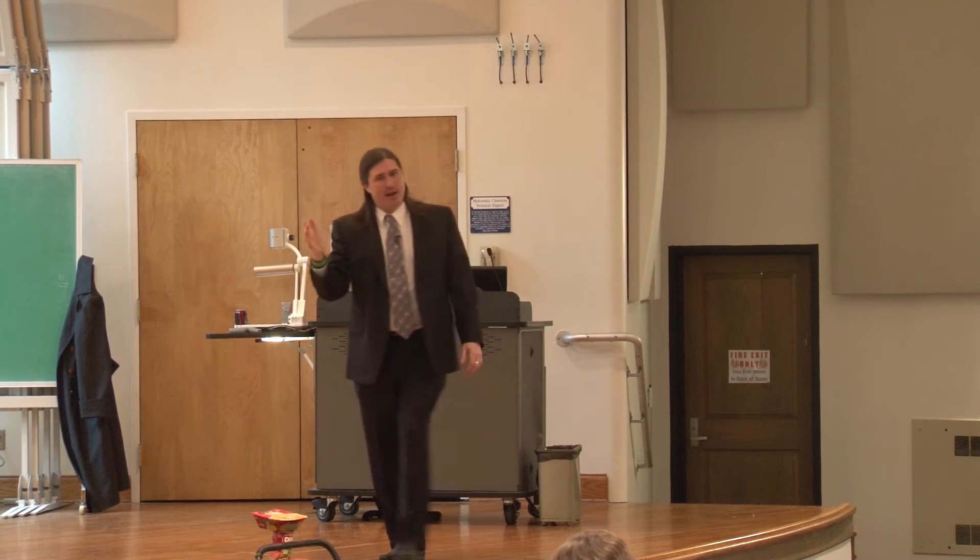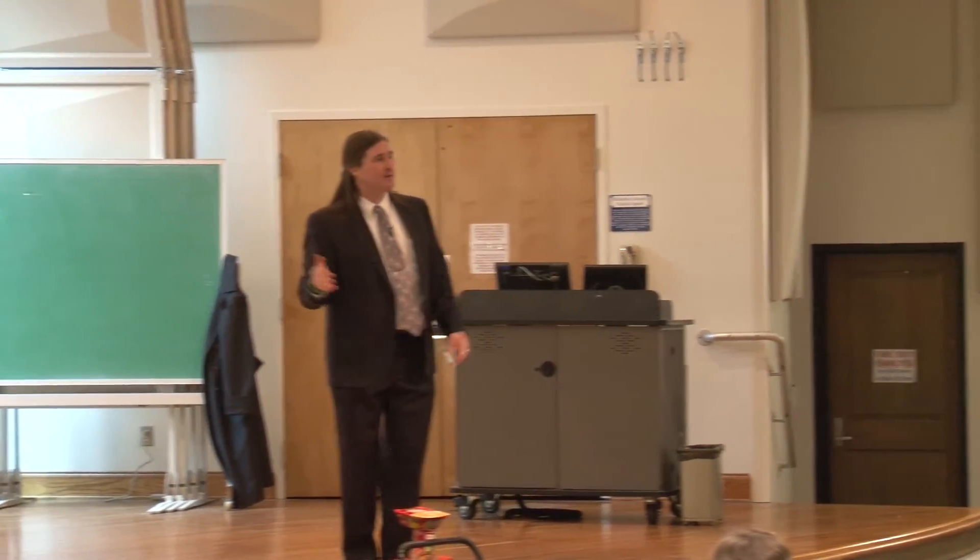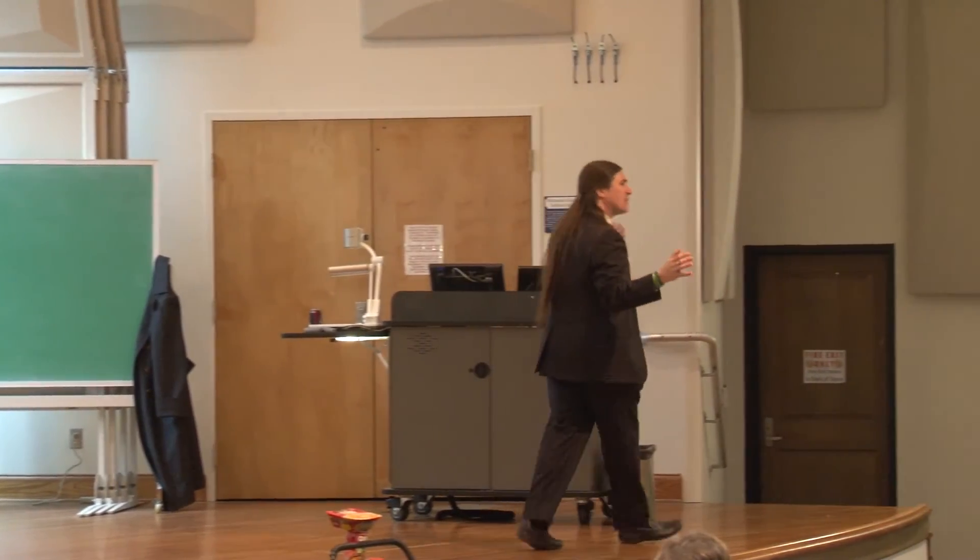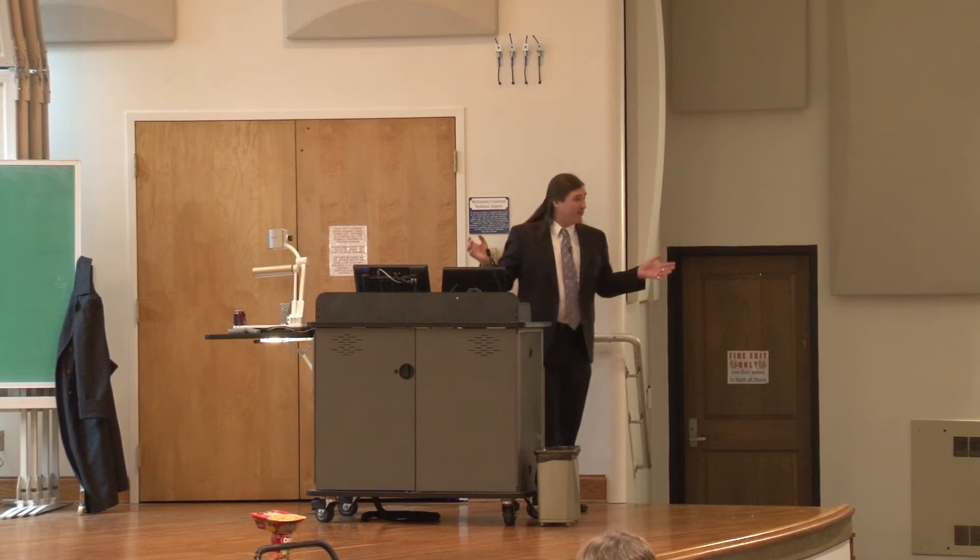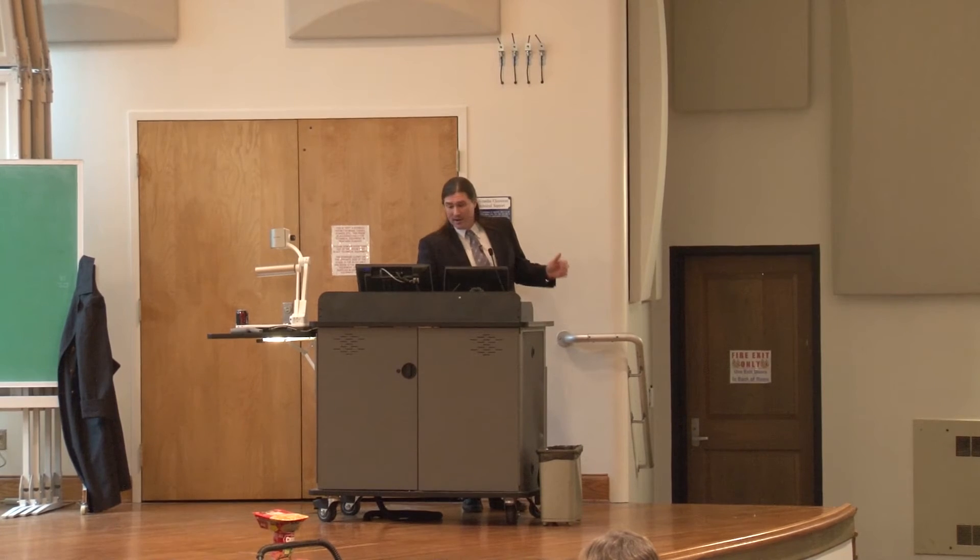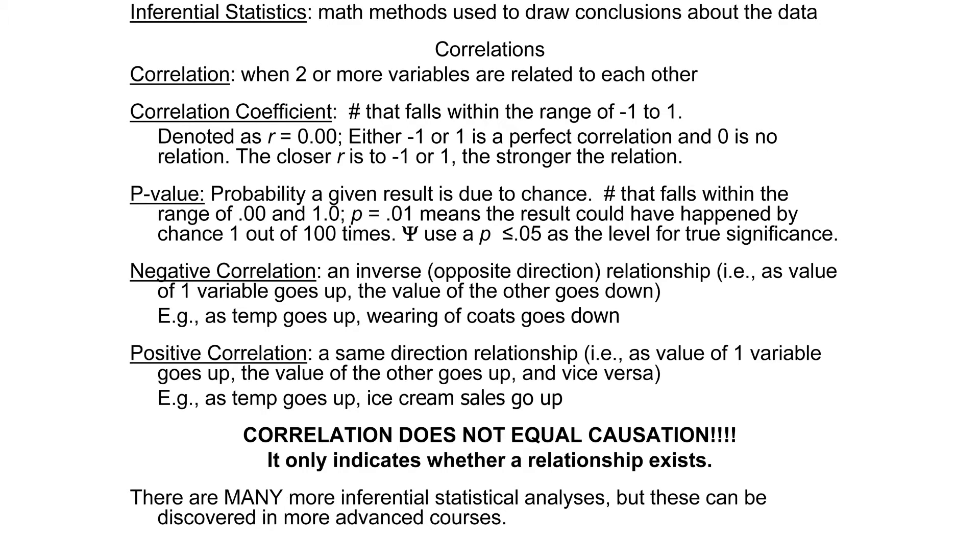If positive one is a perfect positive correlation and negative one is a perfect negative correlation, then a zero means there's no relationship. So now what we're talking about is that, assuming there is one, what direction does it indicate the variables are related in? Co-related variables. So as temperature goes up, wearing of coats goes down. I can measure temperature with great precision. But now we're into the realm of human behavior. Measure coat wearing, and what you find is you need a really good operational definition of coat.